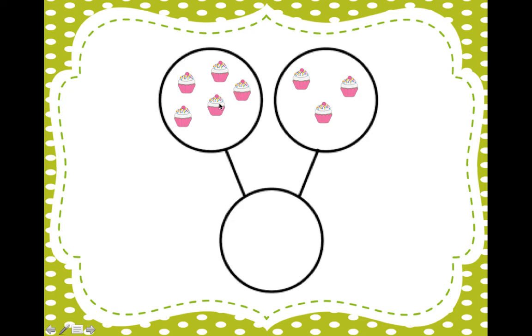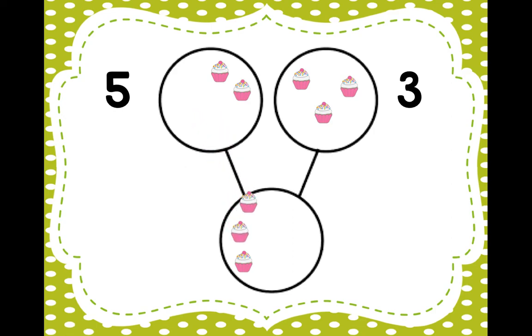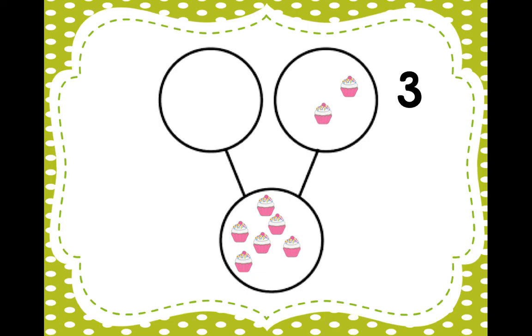Here's another problem. In this circle we have one, two, three, four, five cupcakes. In this circle we have one, two, three cupcakes. We're going to put all the cupcakes together in this circle on the bottom to see how many cupcakes we have. Ready? One, two, three, four, five cupcakes. And over here we have one, two, three cupcakes. How many cupcakes do we have all together? One, two, three, four, five, six, seven, eight cupcakes.